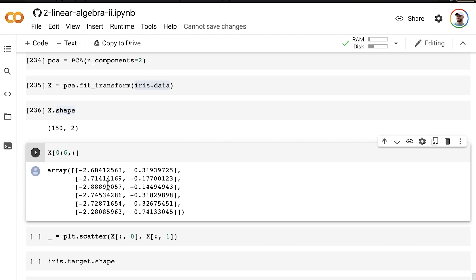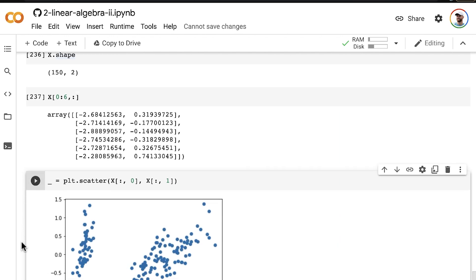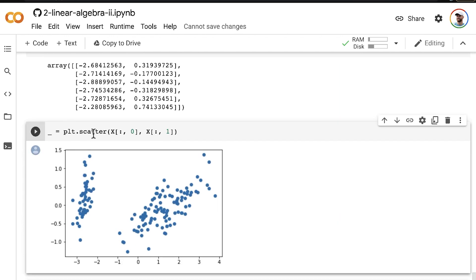So now we can plot those principal components out using the matplotlib scatterplot method. So across the two principal components, we now have our 150 flowers laid out. And we can see that there is a clear structure here.